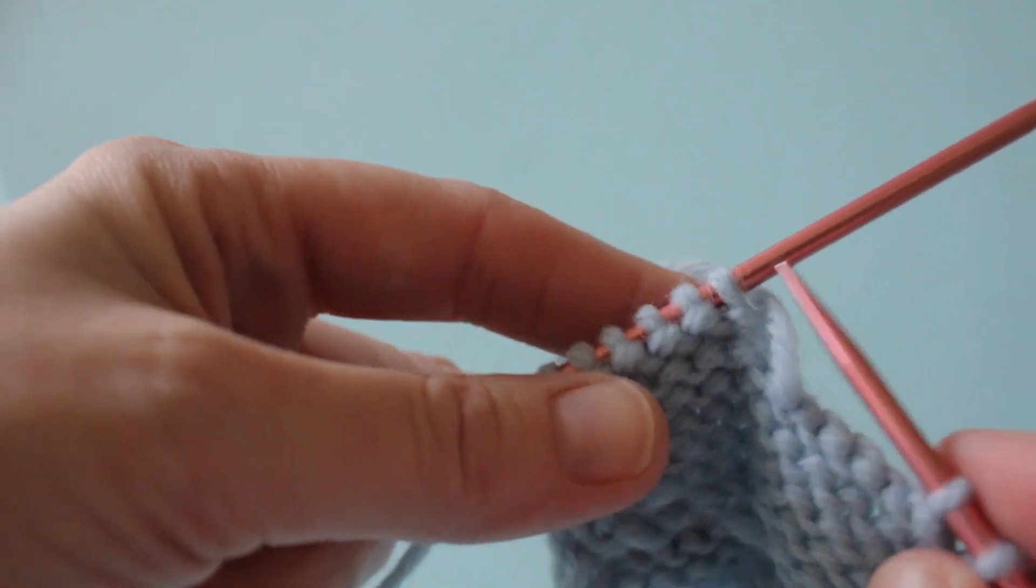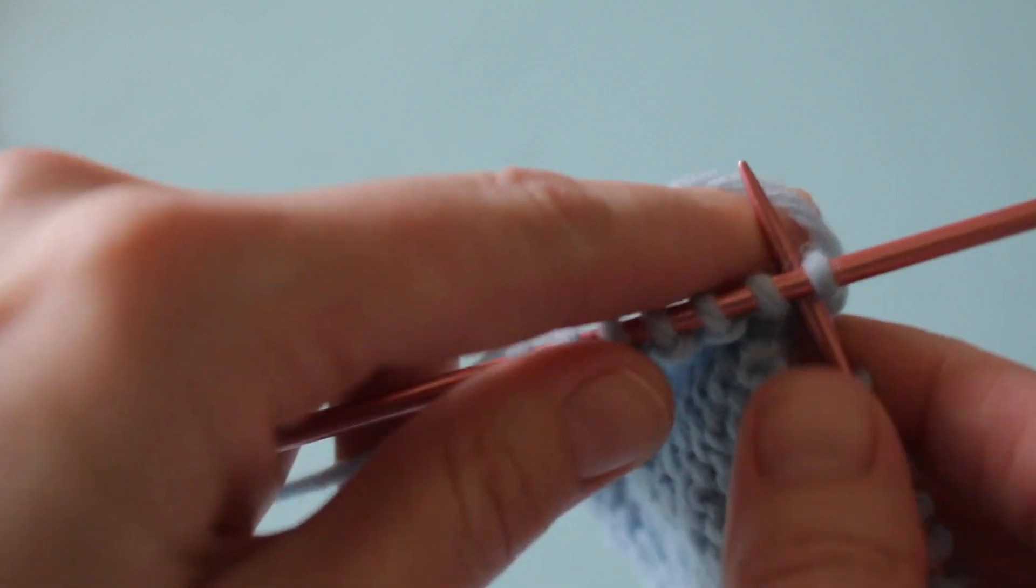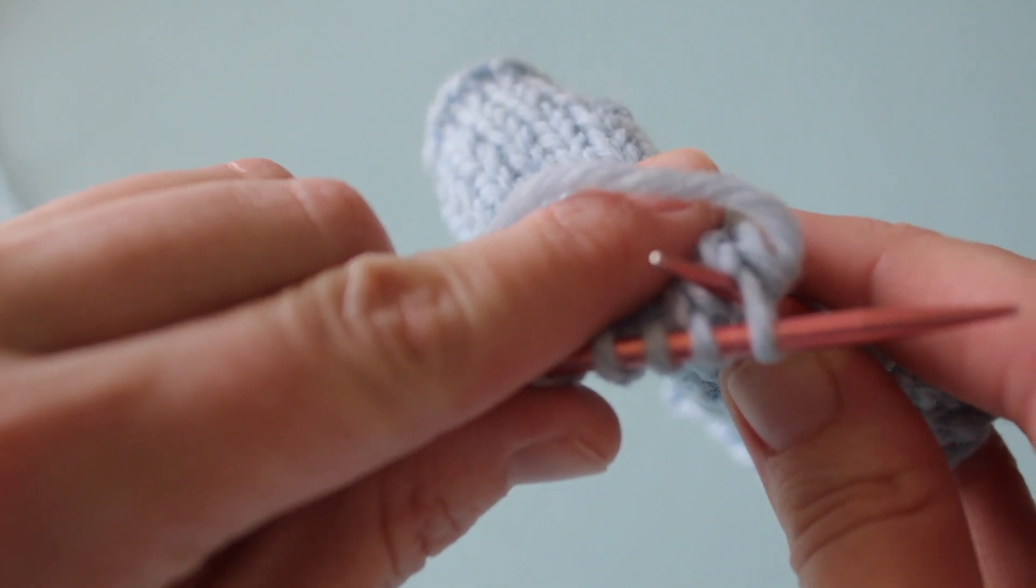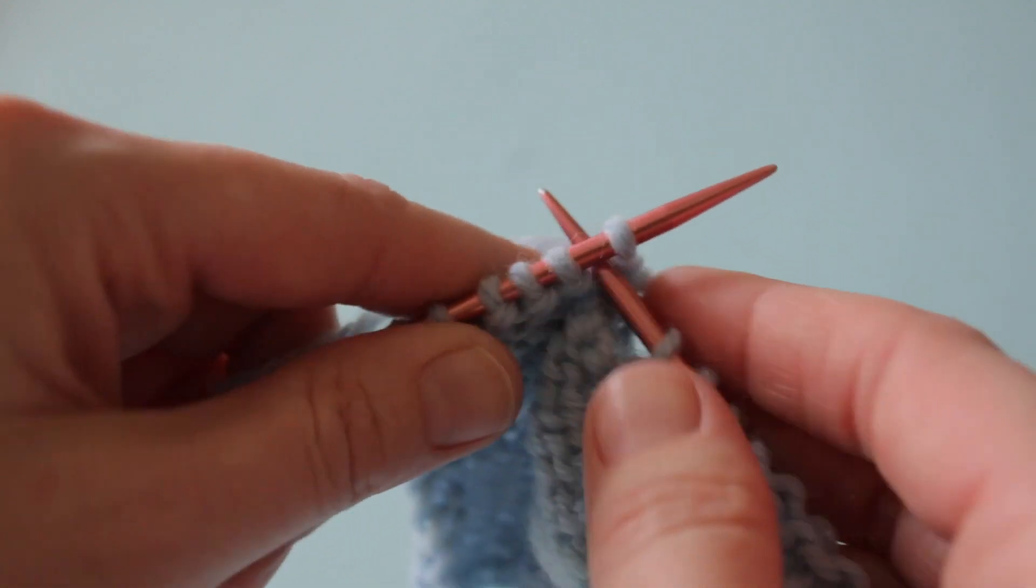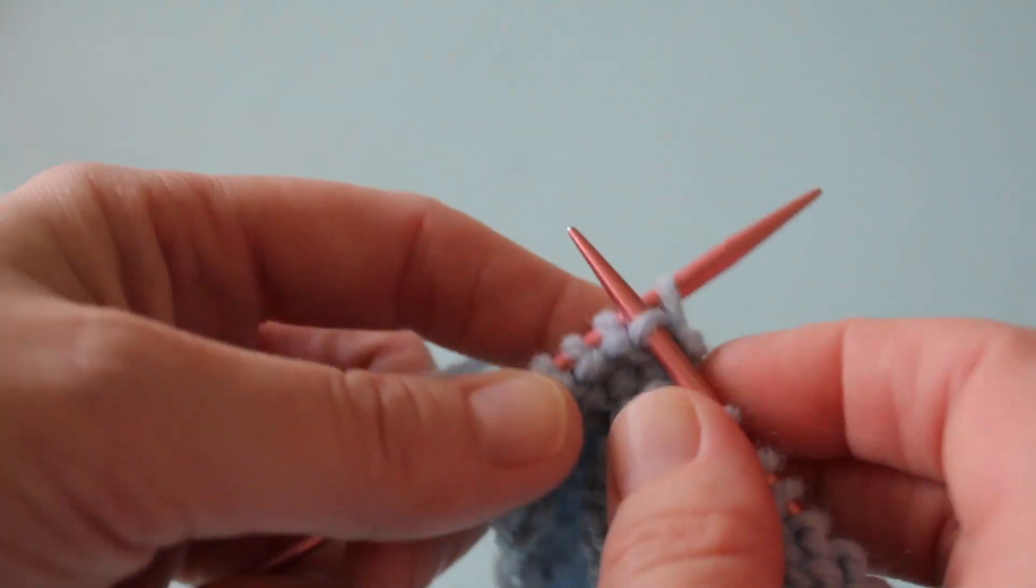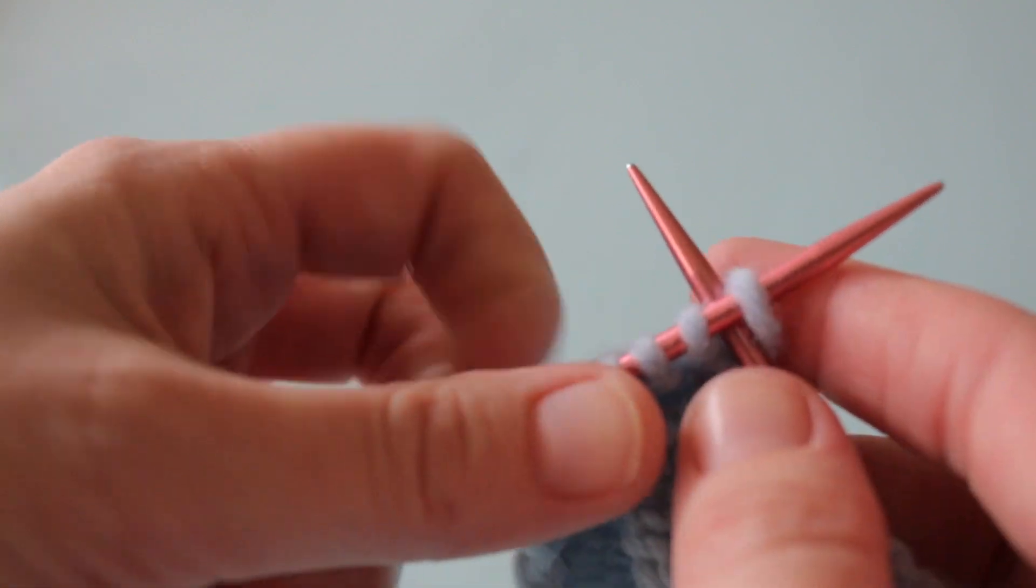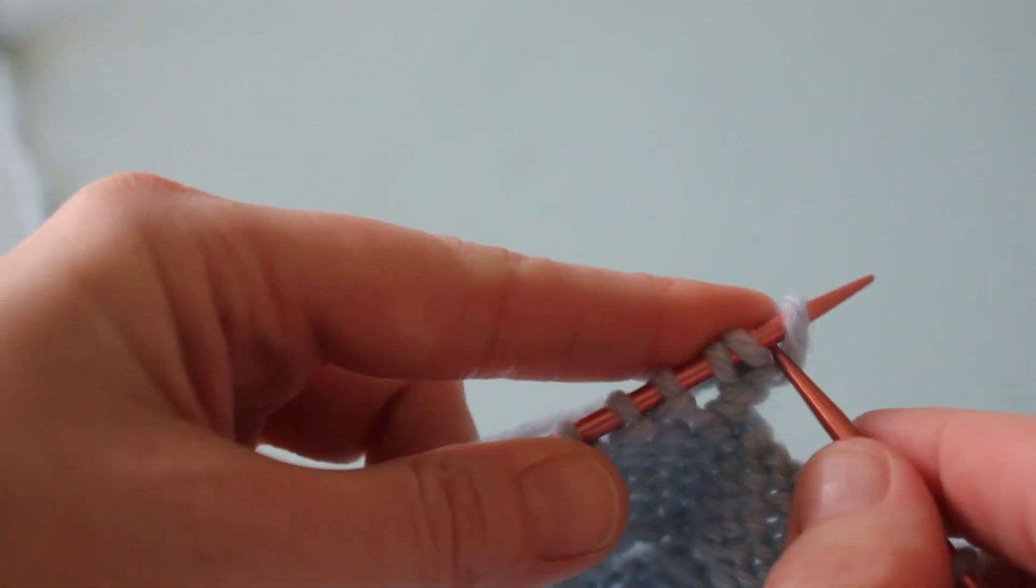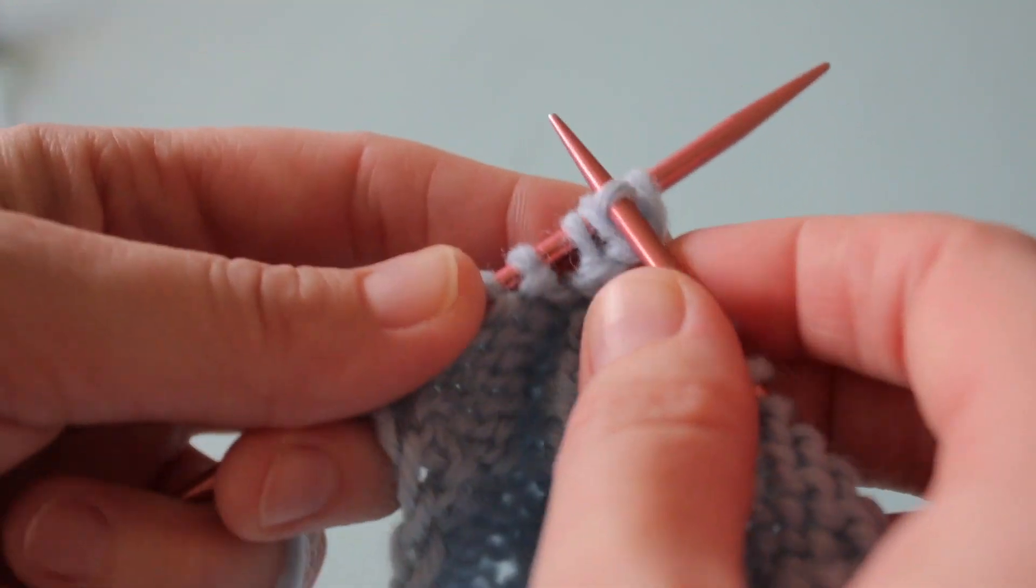To continue our one-row buttonhole we're going to insert the right-hand needle in between the first two stitches on the left-hand needle. You might recognize this form of casting on as a cable cast on from other knitting projects. With our needle inserted we're going to wrap the working yarn around the right-hand needle and draw up a loop before popping it back onto the left-hand needle. We're going to repeat the process of inserting our working needle in between the first two stitches on our left-hand needle, drawing up a loop, and placing it back on the left-hand needle.